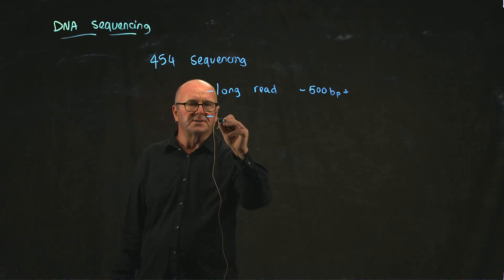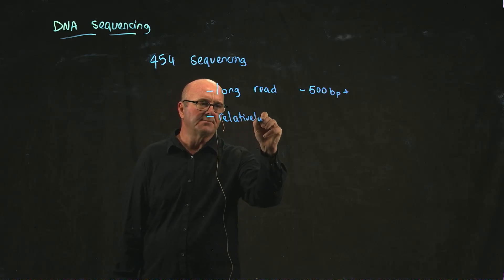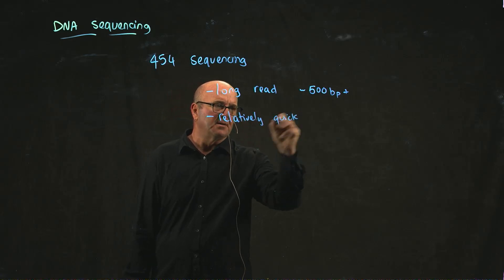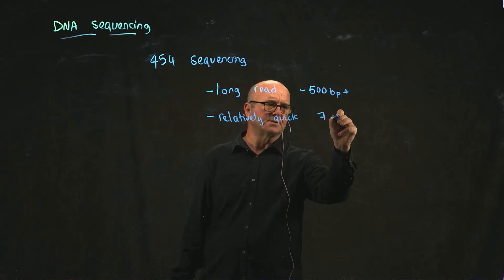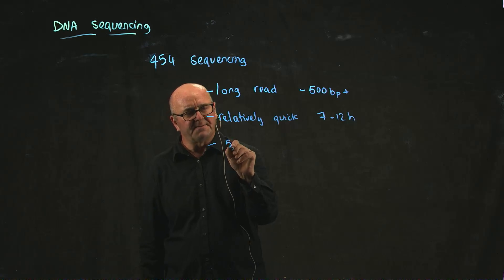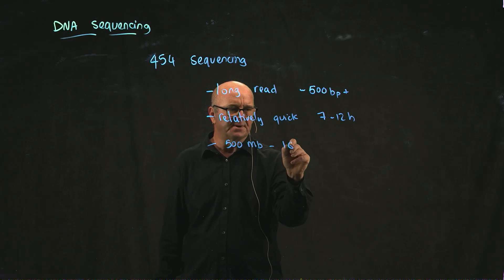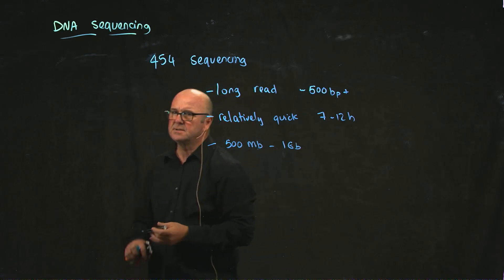It was relatively quick to do the sequencing—about 7 to 12 hours—and it would generate about 500 megabases to a gigabase of sequence.